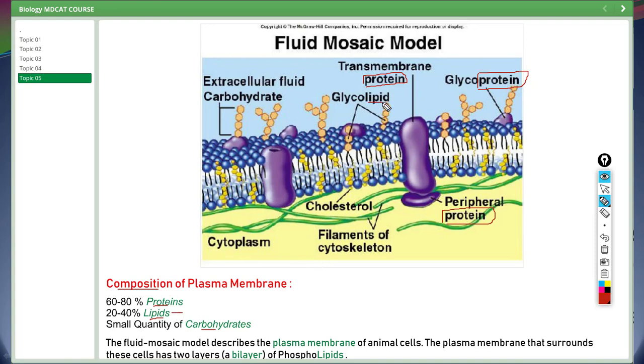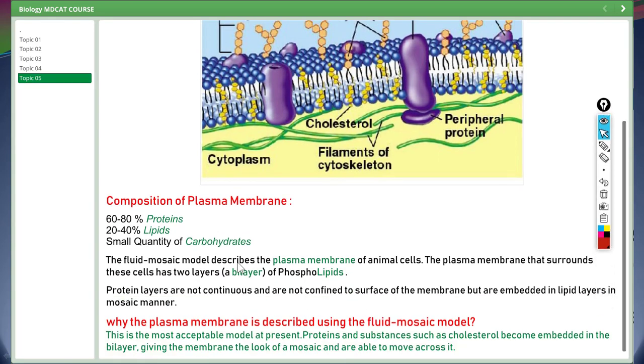Next, you can see glycolipid. Here a continuous bilayer is made up of phospholipids. And finally few carbohydrate molecules present in bilayer. The fluid mosaic model describes the plasma membrane of animal cells. The plasma membrane surrounds the cells and has two layers of phospholipids forming bilayer. Protein layers are not continuous and are not confined to surface of the membrane, but are embedded in lipid layers in mosaic manner.